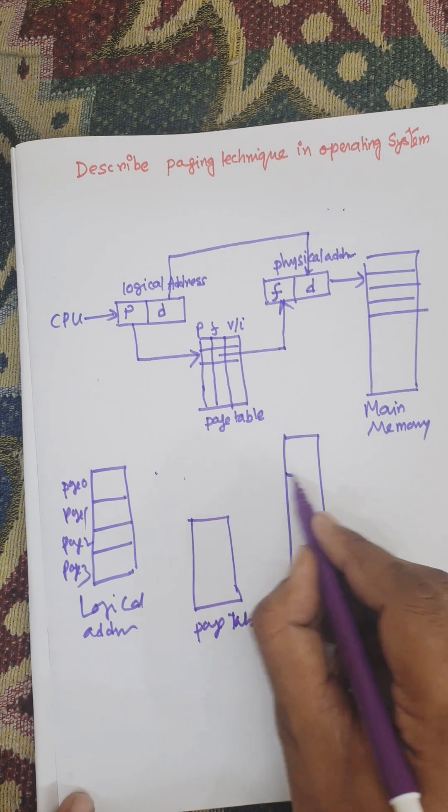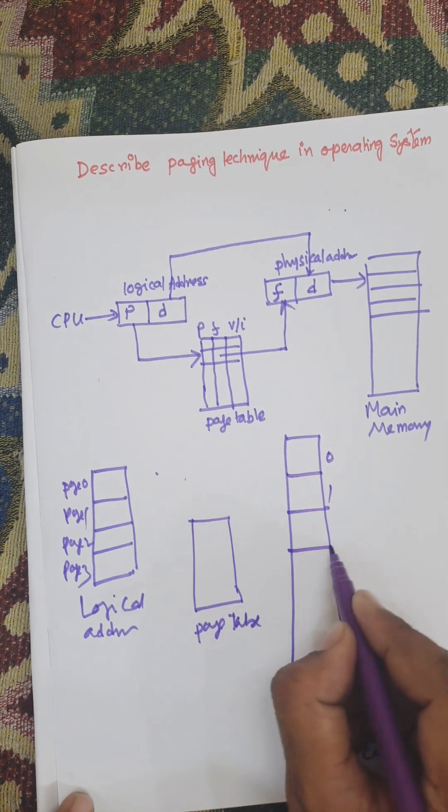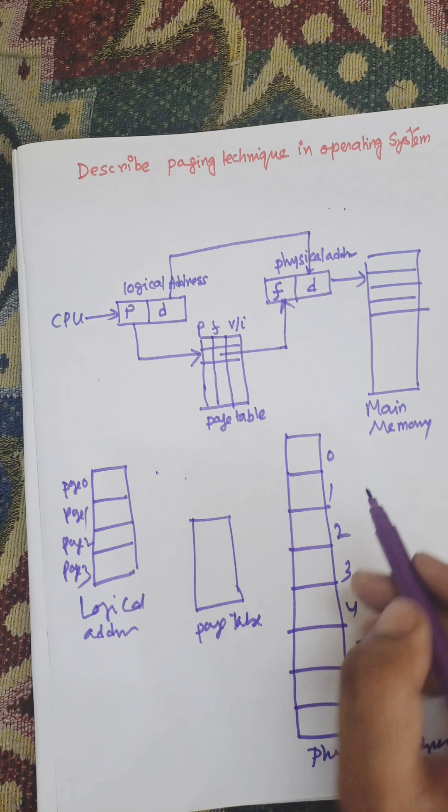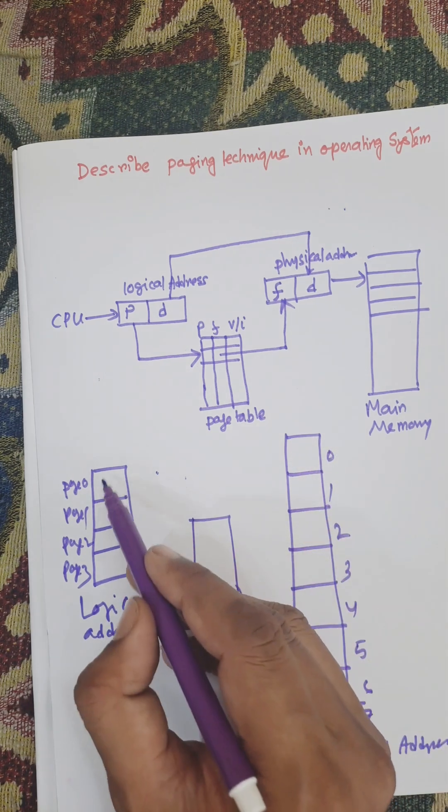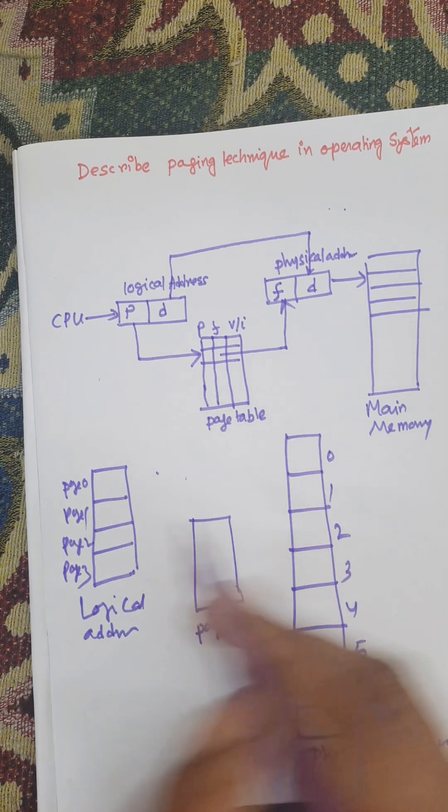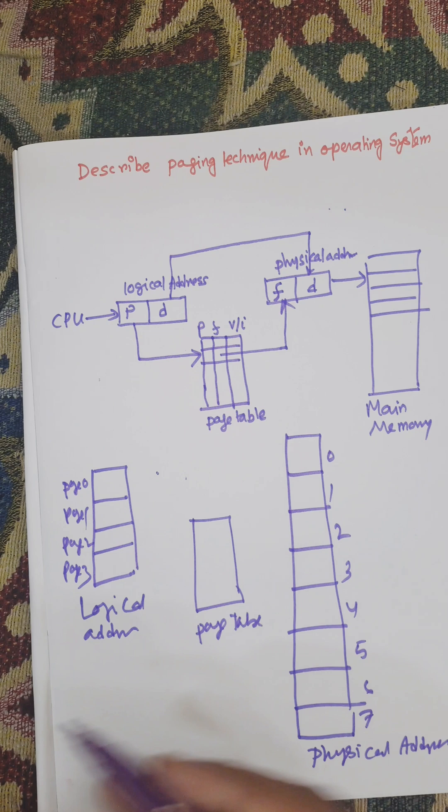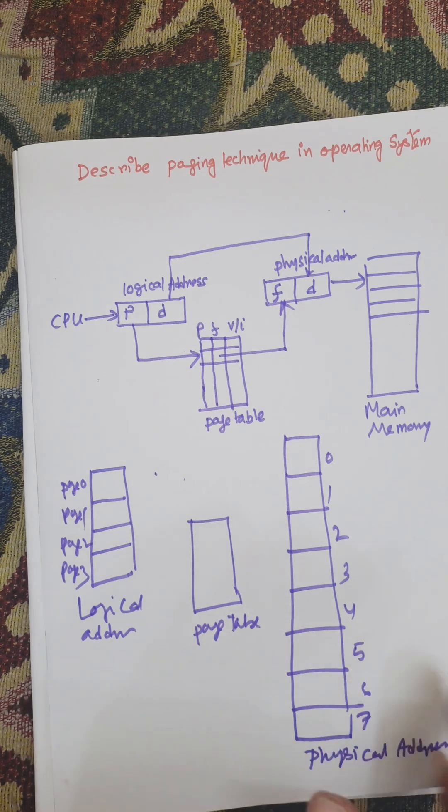Now suppose these are the frame numbers: frame 0, frame 1, frame 2. The size of the page and size of the frame is equal. Suppose this is 4 bytes then it will also be 4 bytes. Number of frames and number of pages can be different but size must be same.